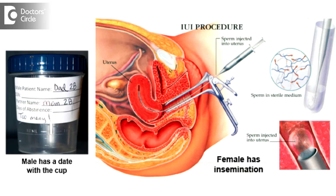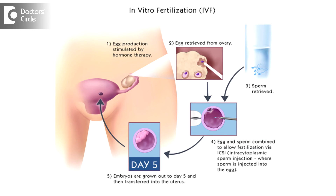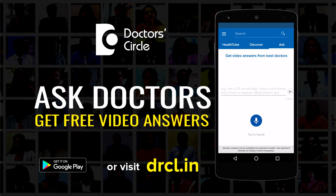In conclusion, women with low ovarian reserve and volume should plan to conceive sooner. If not conceiving, meet the infertility specialist for planning other modes like IUI, IVF, or donor oocyte. Thank you.